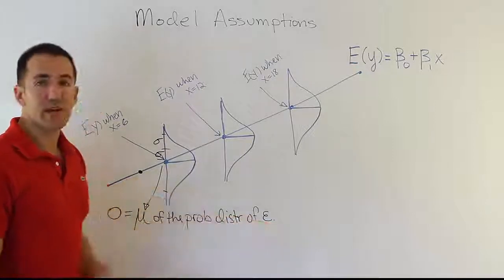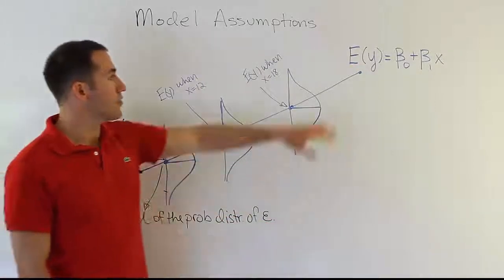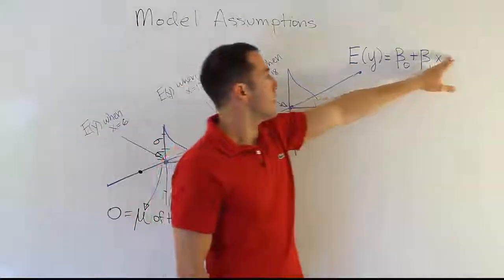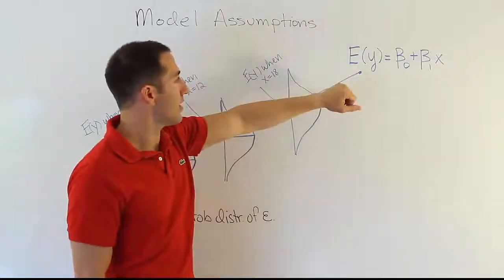So on average, the error is zero. Which we kind of knew from this. That's why we're going to drop off the error term in our model.